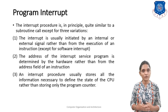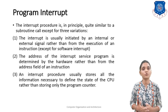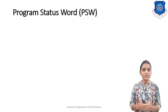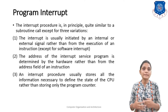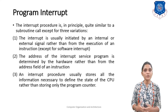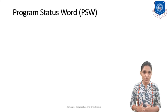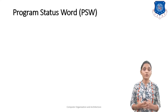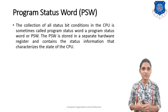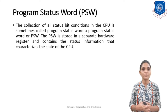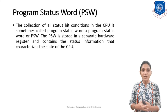The third difference is that in an interrupt procedure we usually require to store all of the information necessary to define the status of the CPU, rather than storing only the program counter as we do in a subroutine call and return. These are the three major differences. The status of the CPU is generally represented by the Program Status Word, so let me explain what the PSW is.